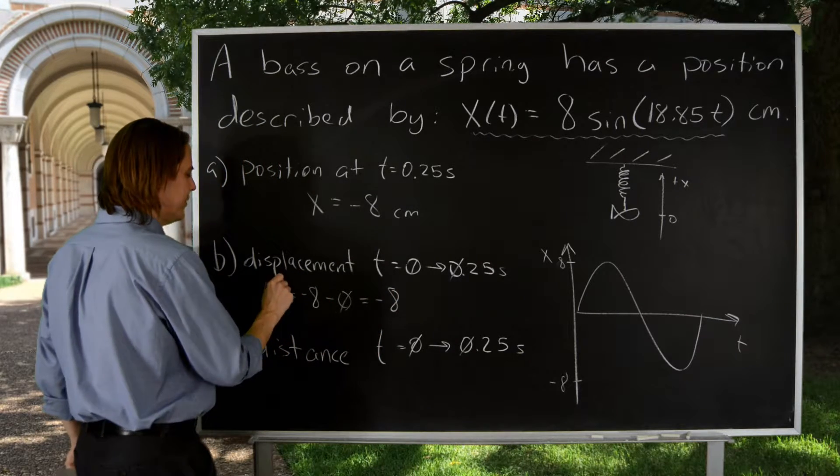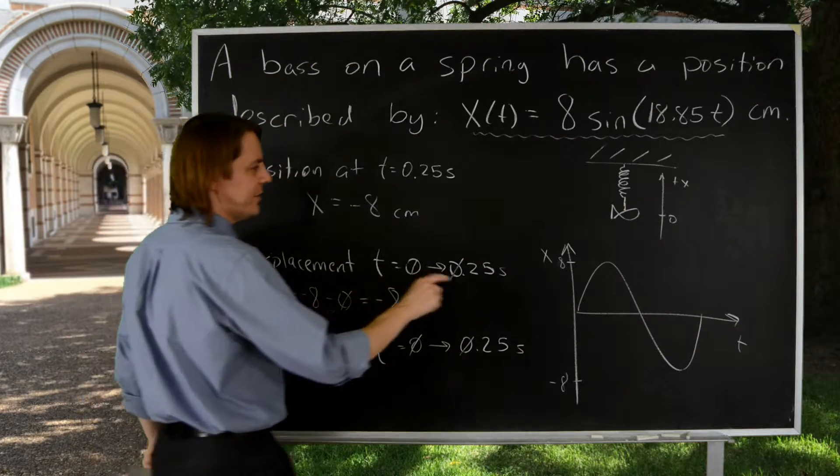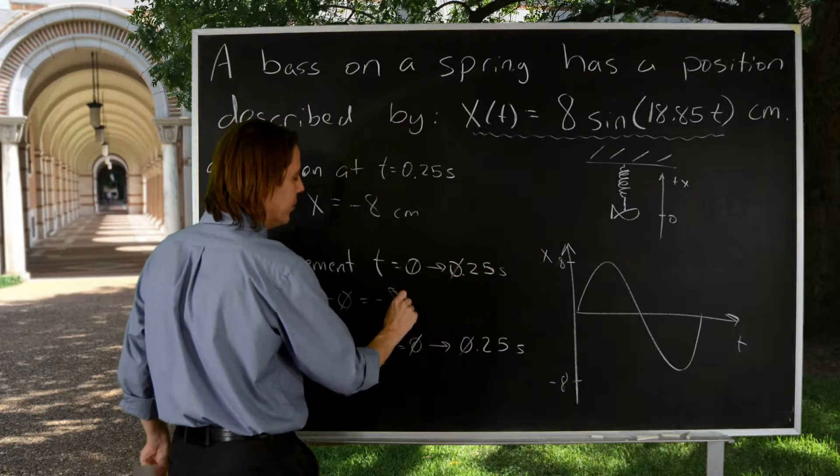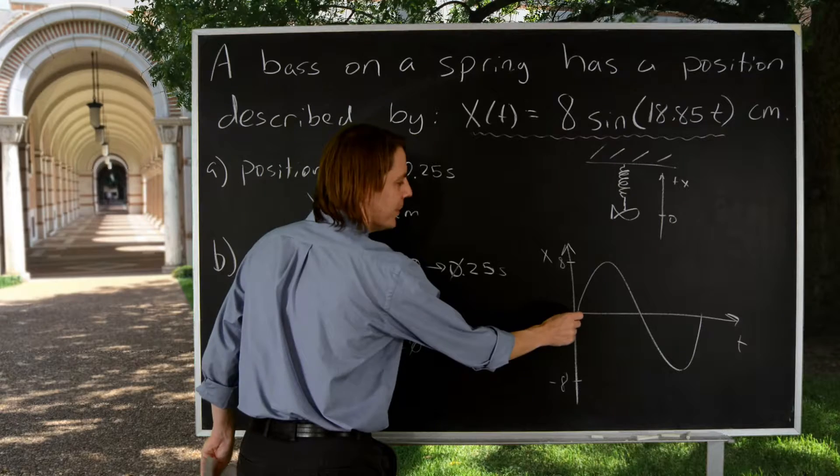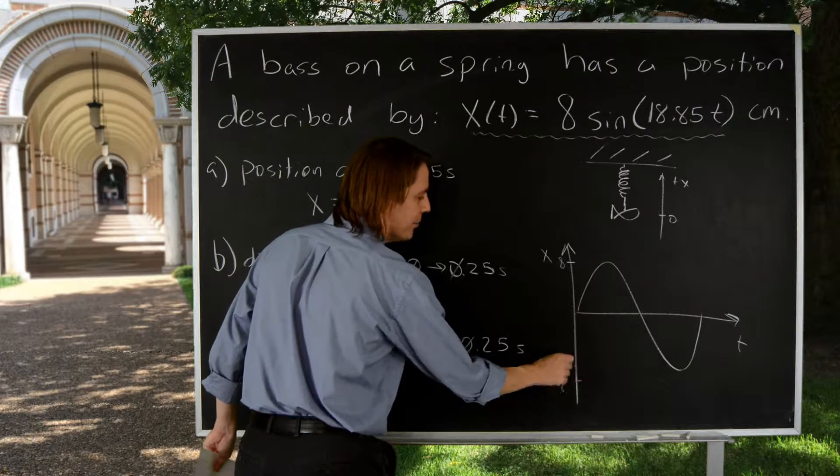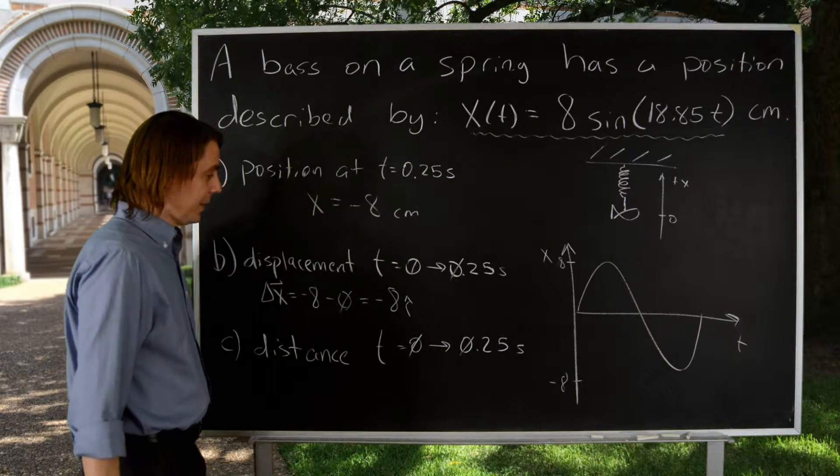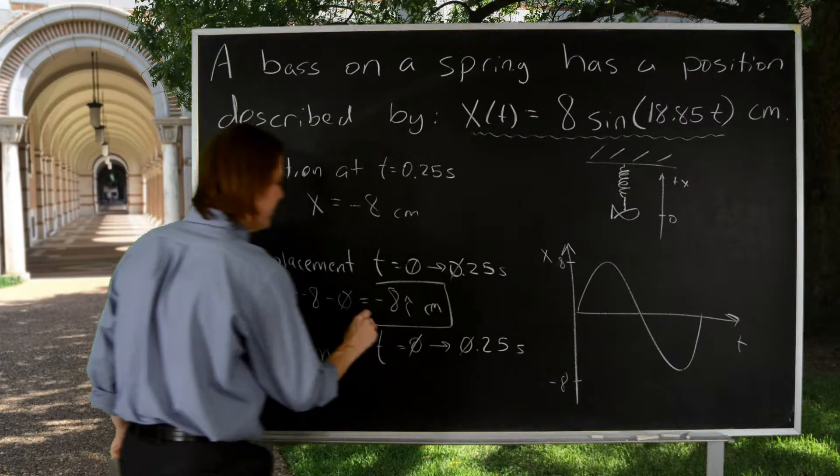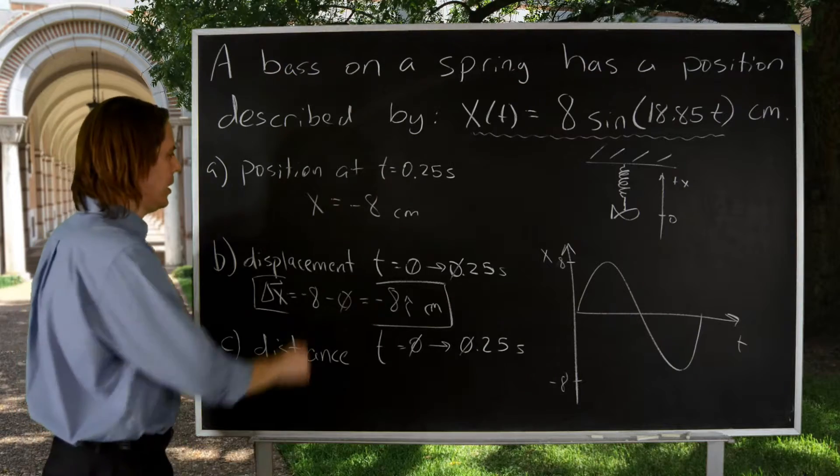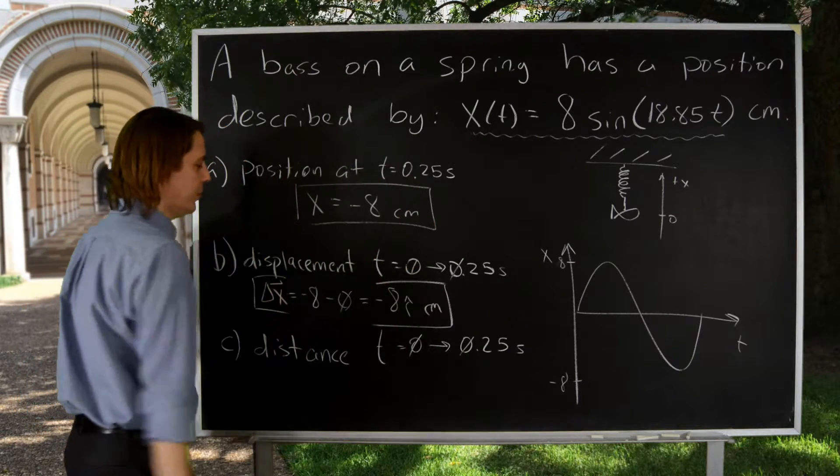But displacement, we always want to give as a vector. So let's say it's minus eight, and it's just i-hat. This is all motion on the x-axis. So the displacement vector looks like this. Start at zero and go down to minus eight. And then put a unit on there, centimeters. So minus eight i-hat centimeters.